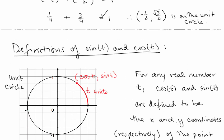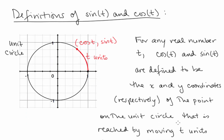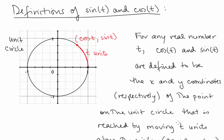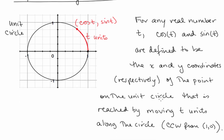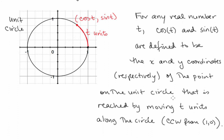Now let's talk about the definitions of sine t and cosine t. For any real number t, cosine t and sine t are defined to be the x and y coordinates, respectively, of the point on the unit circle that is reached by moving t units along the circle.